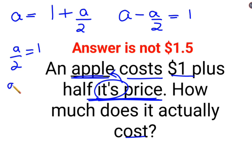In order to find the value of A, multiply both sides by 2. So the cost of apple is actually $2.